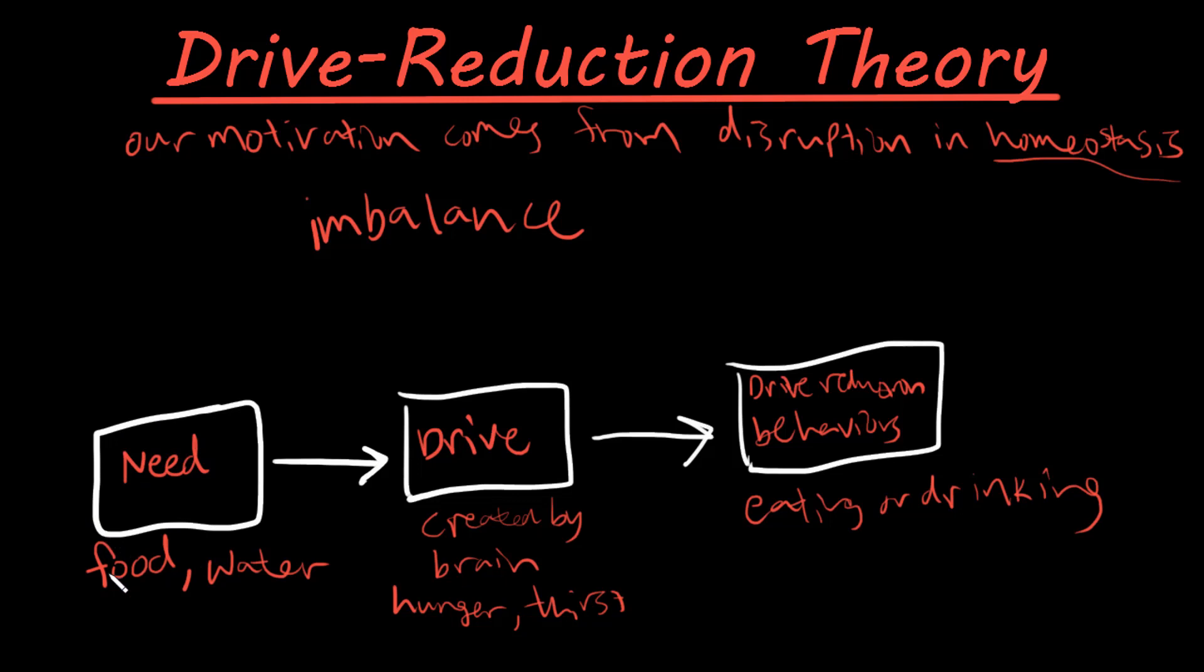So when we have this need for food and water, we are driven by our brain. So it tells us that it needs food and water by giving us hunger and thirst. And then what do we do? We drive and reduce these drives through our behaviors with eating or drinking. And then we will no longer feel this hunger or thirst.